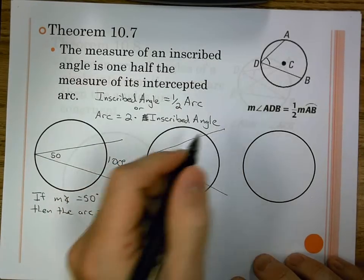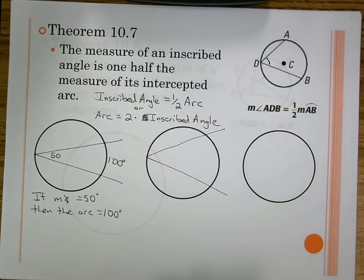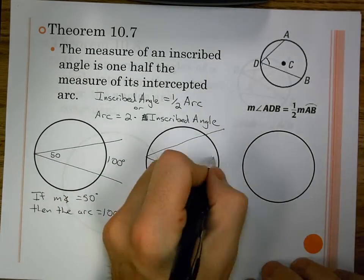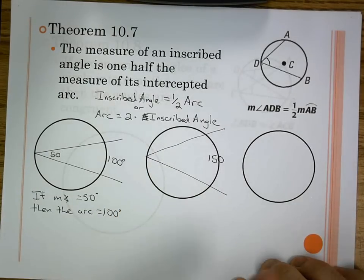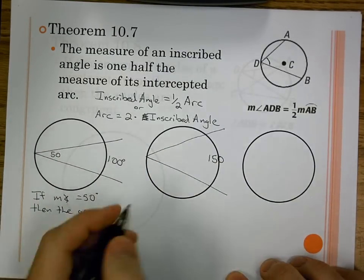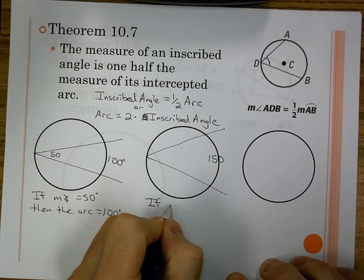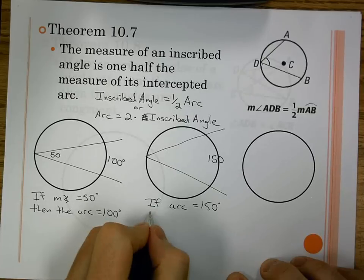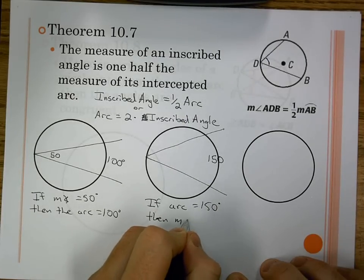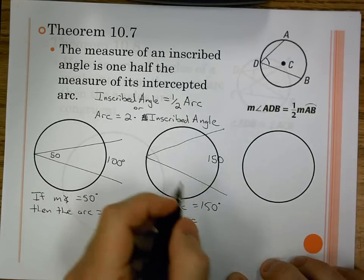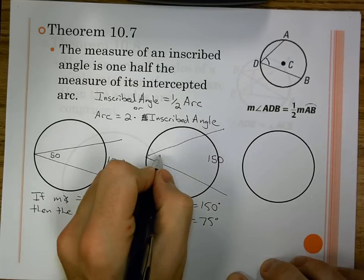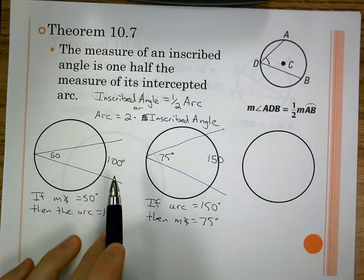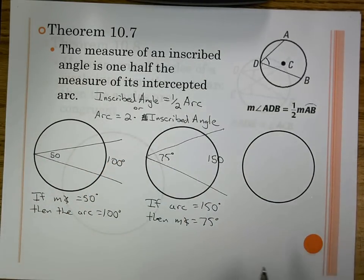Let's do it again. This time, say we have an arc that is 150 degrees. I need to go from the arc to the angle. If the arc equals 150 degrees, then the measure of the angle would be half of that — it would be 75 degrees. Let's take a second and think about this.